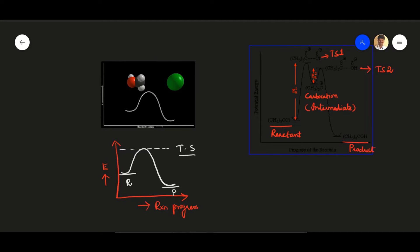Among all species, transition states are highest in energy. Transition state one has more energy and its formation determines the rate of the reaction. The intermediate is at somewhat lesser energy than the transition states. The carbocation intermediate is least stable among true species, and it leads to the formation of highly stable products with very low energy. Reactants have more energy compared to products, and intermediates have less energy compared to transition states.